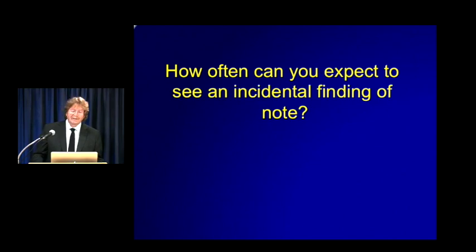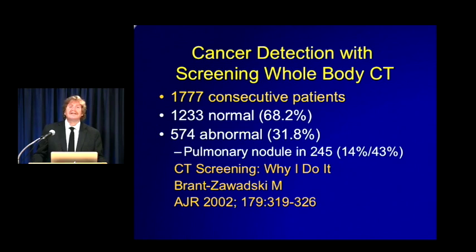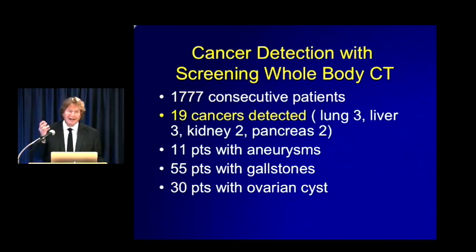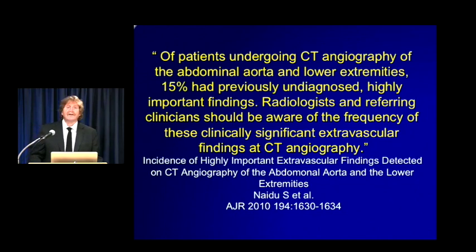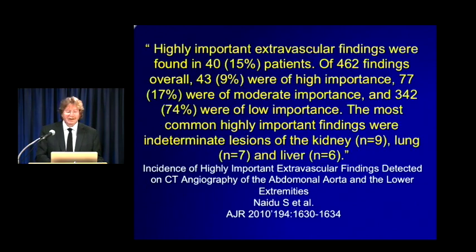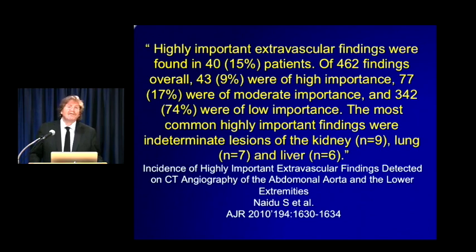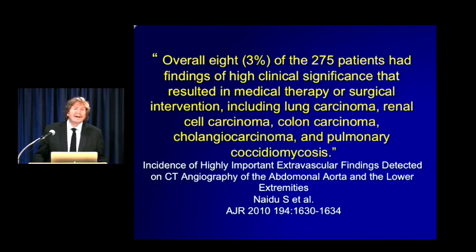How often do you see an incidental finding? Looking at CT screening data from Brantzewski's article on healthy patients, in about one-third of 1,777 cases a finding was seen — mostly pulmonary nodules, but also cancers, aneurysms, gallstones, and ovarian lesions. Another article by Nadeau on CT angiography for the abdomen and lower extremities found 15% had undiagnosed highly important findings. The majority were of low importance, but there were indeterminate renal lesions, lung lesions, liver lesions, and eight patients had findings requiring subsequent therapy, including cancers.